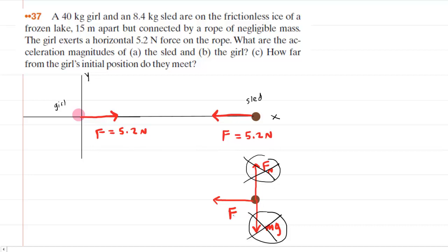That means the only horizontal force acting on the sled is the force with which the girl is pulling on the sled. So for the sled we can set up a Newton's second law equation: the net force in the x direction equals the mass of the sled times the acceleration of the sled in the x direction.